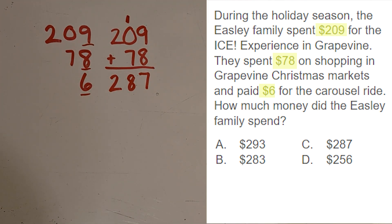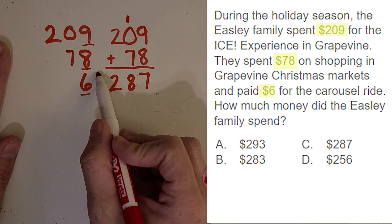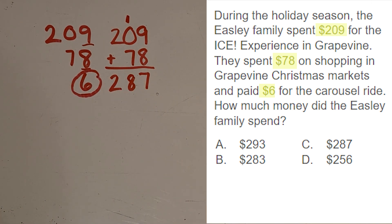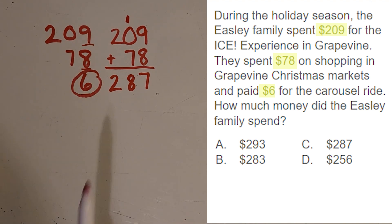I see an answer choice that says $287 — so are we done? Is that the answer? Hopefully you noticed that we have not added the carousel cost yet. It could be really easy to get distracted by choice C, but I'm going to keep going. It's a good thing I highlighted and wrote everything down so I don't forget.